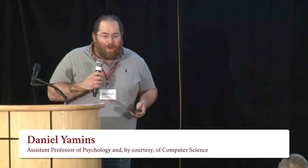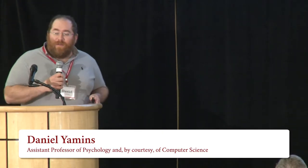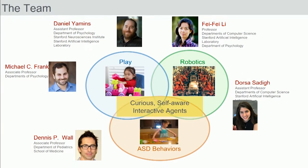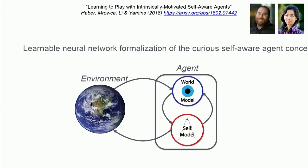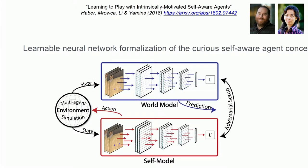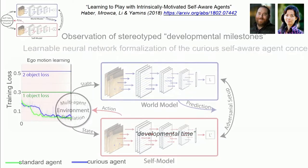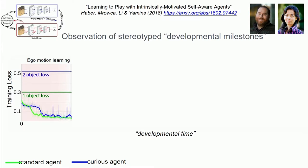Our team consists of myself, Fei-Fei Li — a computer vision expert — Dorsa Sadeg — a roboticist — Dennis Wall — an autism expert — and Michael Frank — a developmental psychologist. Together we're well positioned to attack this core idea. Working with Fei-Fei, in my group we've built a deep neural network instantiation of a simple version of this self-aware curious agent, with both a world model and self model implemented and learning together in an immersive, rich, three-dimensional physical environment. It turns out that this type of agent is able to develop really interesting naturalistic behaviors on its own.